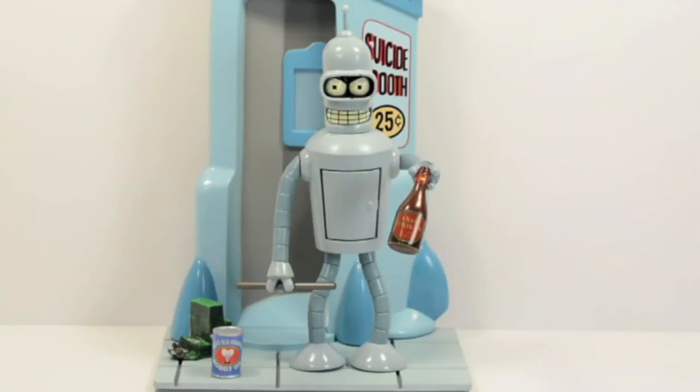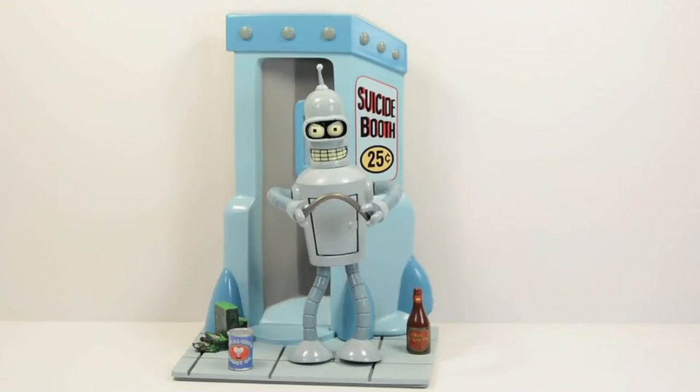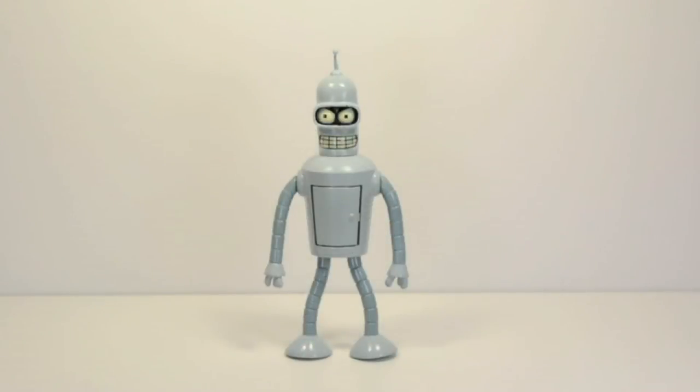So you can fit the girder and the malt liquor in his hand, everything else not really. And you can make him bend the girder. So far this figure is looking spot on. Let's get a closer look.